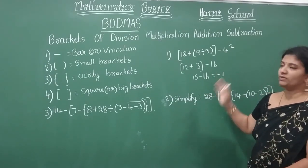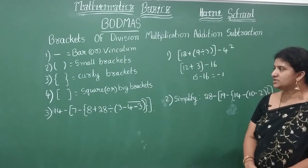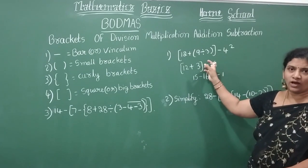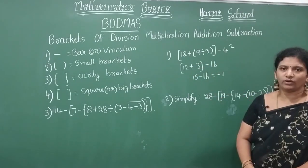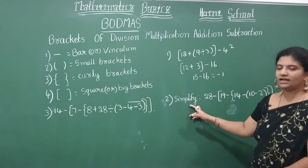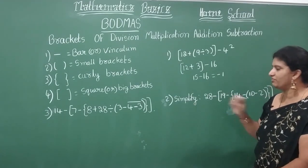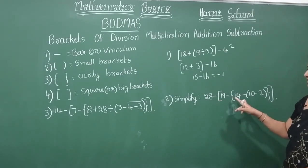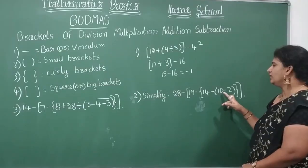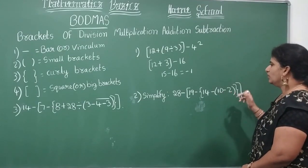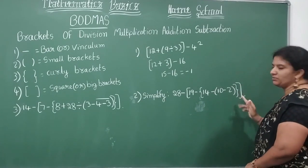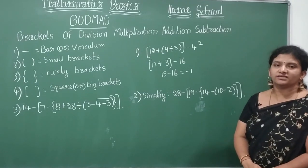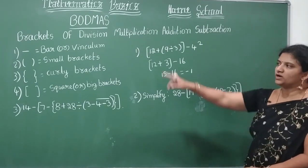How to follow with BODMAS rule? First you go with the division, then any multiplication, otherwise addition, then subtraction. So now let's see the second example here. Simplify: 28 minus square bracket 19 minus curve bracket 14 minus round bracket 10 minus 2. Which one I need to do in this expression first?